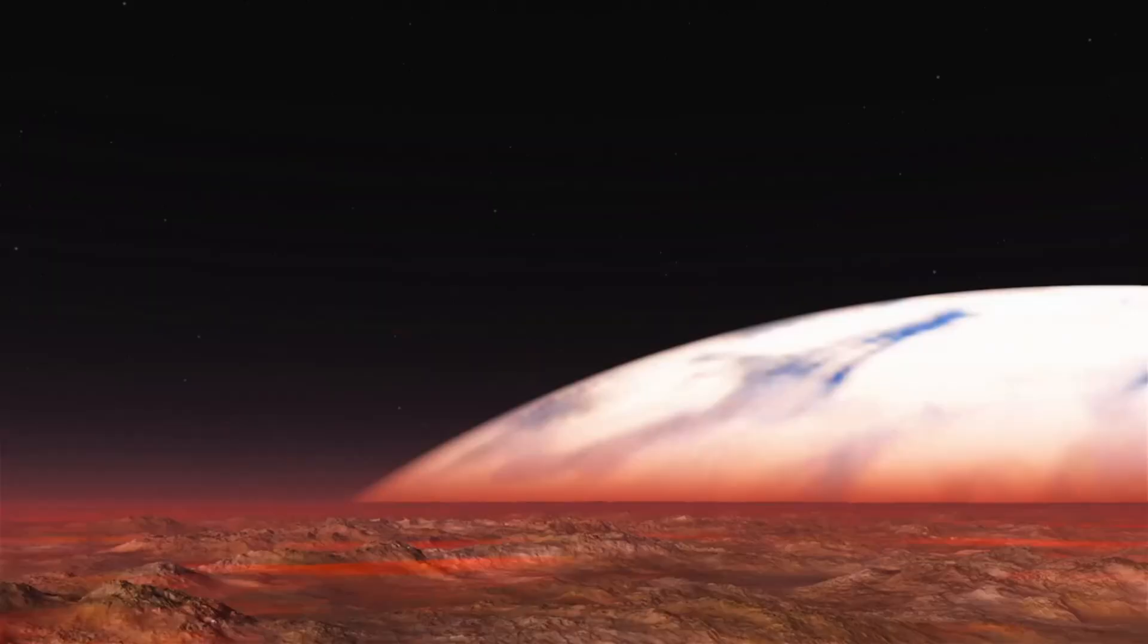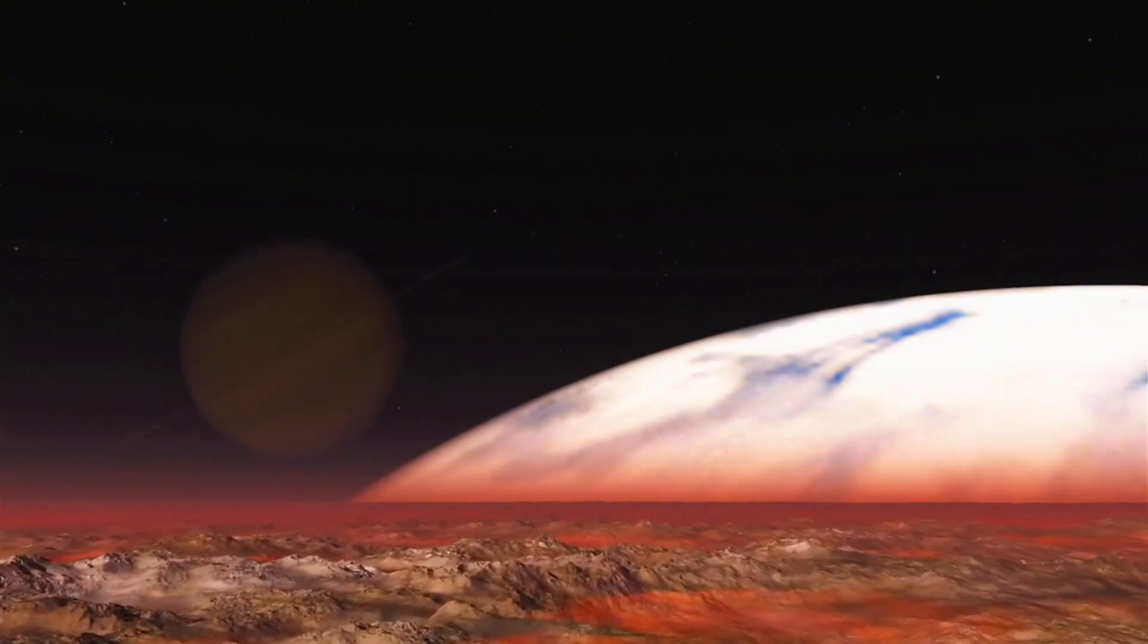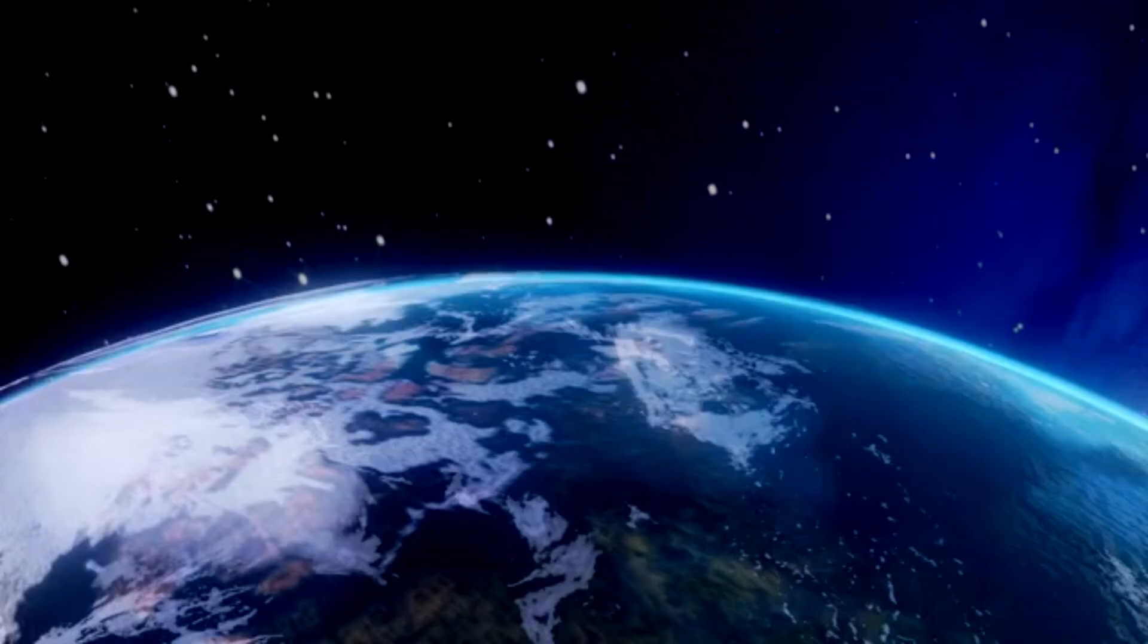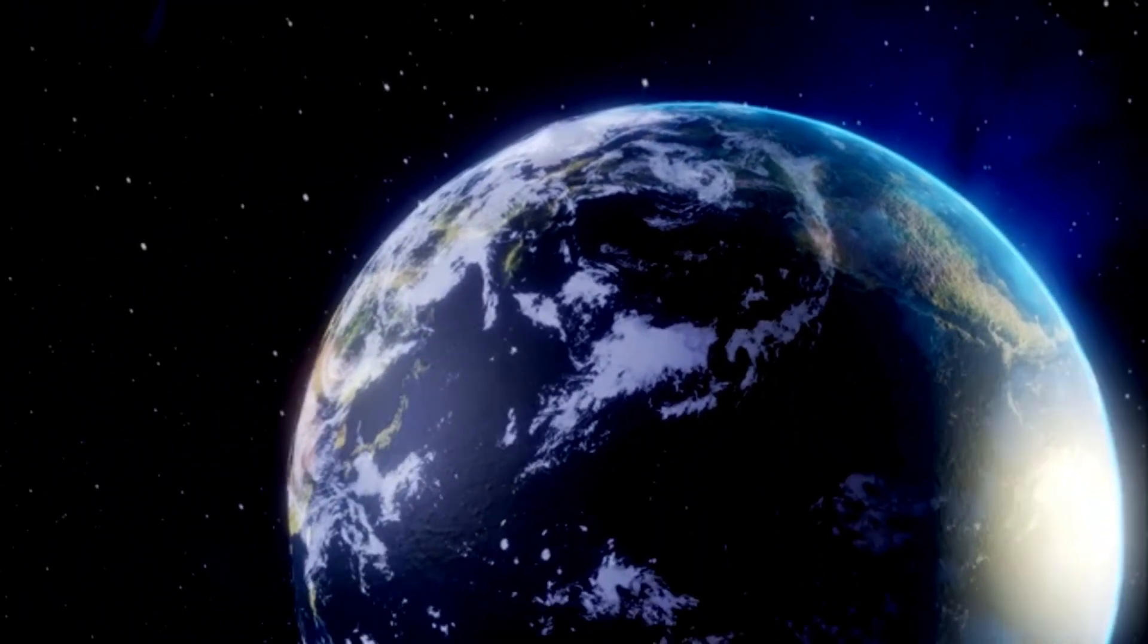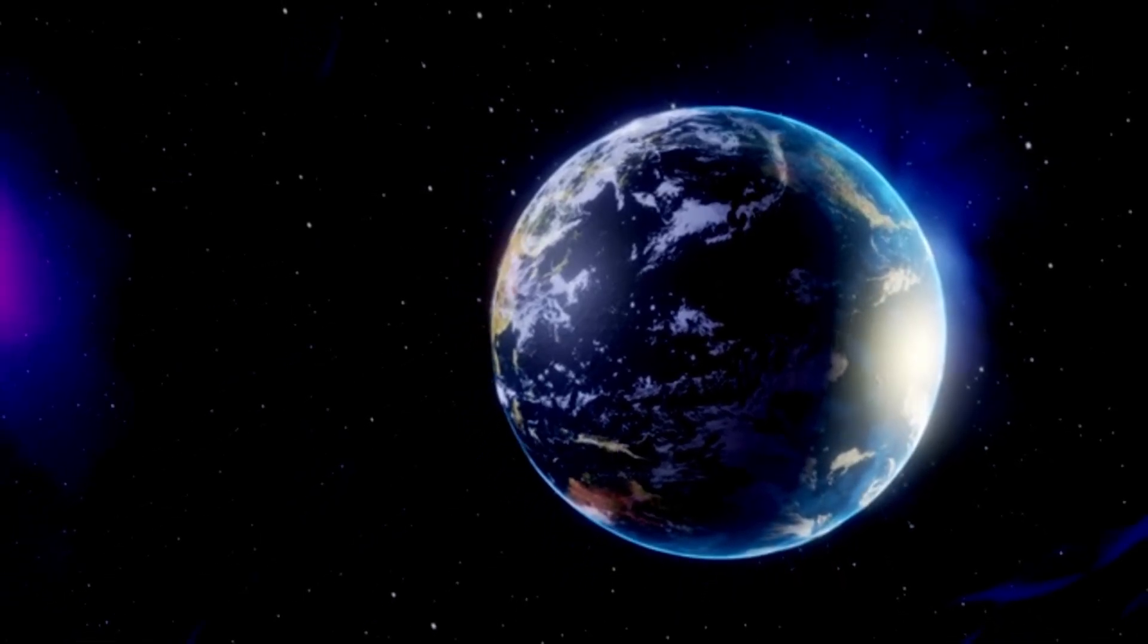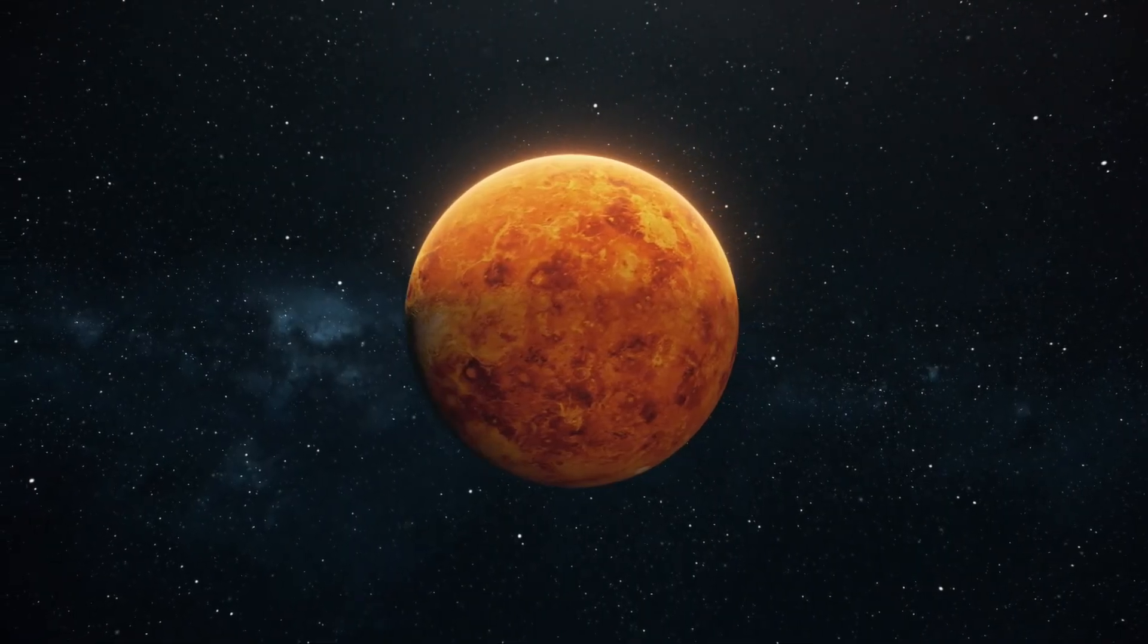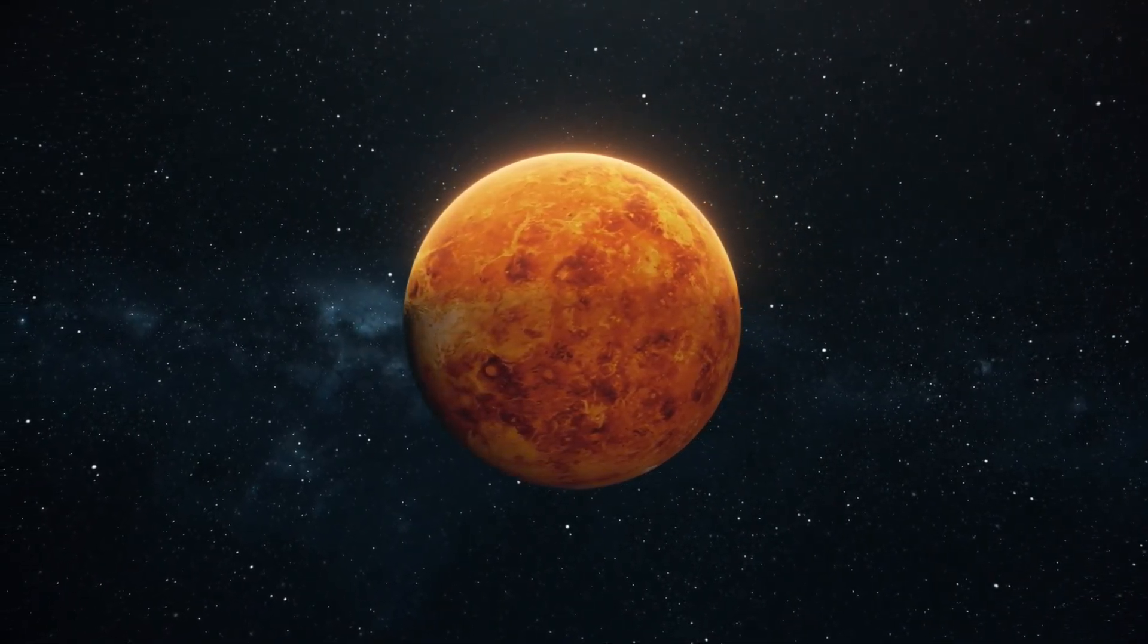The search for alien life on Proxima b is not limited to telescopic observations alone. As technology advances, more innovative techniques for exploring exoplanets will emerge. Concepts such as space probes that could travel to nearby star systems have been proposed, though they are far from being realized. Proxima b, with its relative proximity to Earth, is a potential candidate for one of the first interstellar missions, possibly utilizing light sails or ion drives to reach it within a human lifetime.